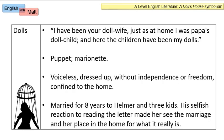Dolls are of course important — it's in the title. Nora says herself: 'I have been your doll wife, just as at home I was Papa's doll child, and here the children have been my dolls.' This idea of cross-generational oppression — being a doll, not necessarily a Barbie doll, but think of a puppet or marionette worked with strings. This idea of being worked by something more powerful than you: compliance, voicelessness, dressed up without independence or freedom, confined to the home. His selfish reaction to reading the letter in Act 3 makes her see her marriage and home for what it really is, and she realises it's all a facade and she has lost her own sense of identity.